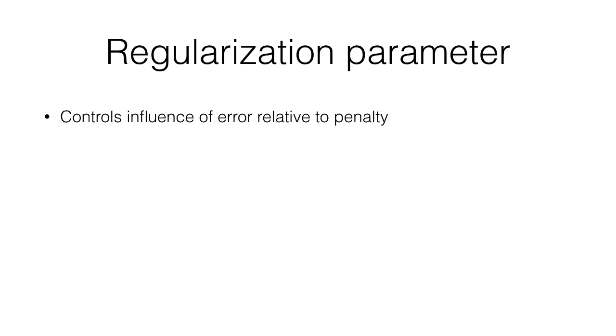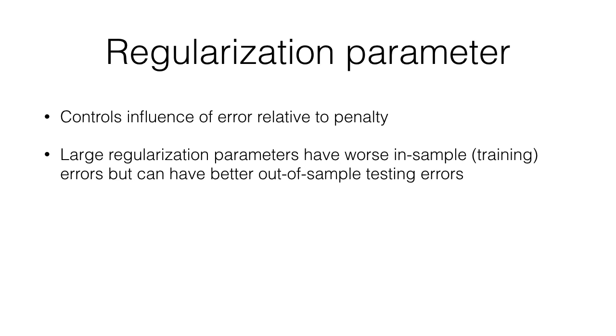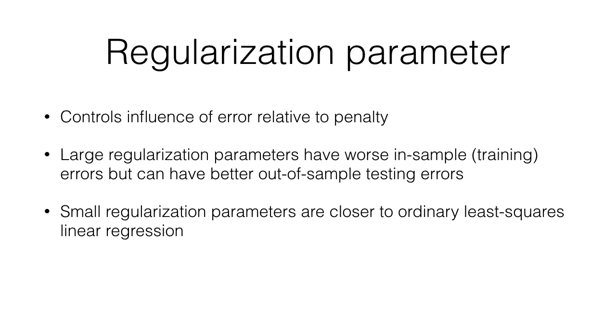One thing not yet discussed is how the balance between penalty and error — the bias-variance tradeoff — is controlled. It's with a parameter in front of the penalty term, often denoted with the Greek lowercase letter alpha. This parameter controls the influence of the penalty relative to error and vice versa. Increasing this parameter will make in-sample training error larger, but up to a point will reduce bias in the model so that out-of-sample testing error gets smaller — and for a predictive model, that's what we really care about. Decreasing the regularization parameter makes the model closer to ordinary least squares regression. What parameter is best depends entirely on the data set in question, so finding the best one is usually done empirically, often through cross-validation.